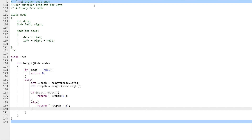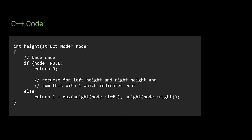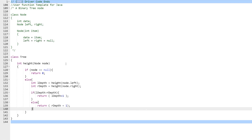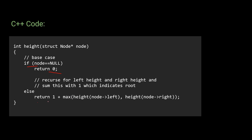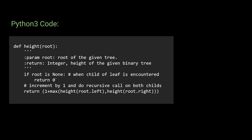The C++ solution is similar — we check if the node is null and in one line return 1 + max(height(left), height(right)). The Python solution also checks if root is None and returns 0, otherwise returns 1 + max(height(left), height(right)), finding the maximum between left and right subtrees and adding 1.